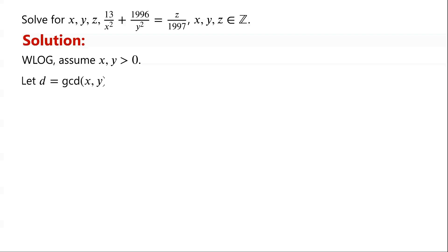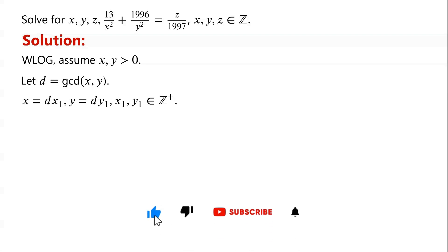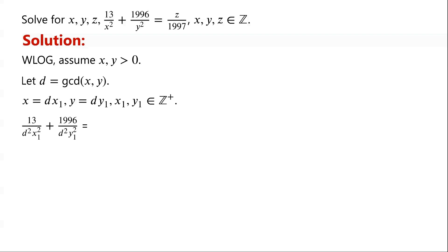Let d be the greatest common divisor of x and y. Then x equals d times x1, and y equals d times y1, where x1 and y1 are positive integers. Substituting x and y in the original equation, we have: 13 over d squared times x1 squared, plus 1996 over d squared times y1 squared, equals z over 1997.